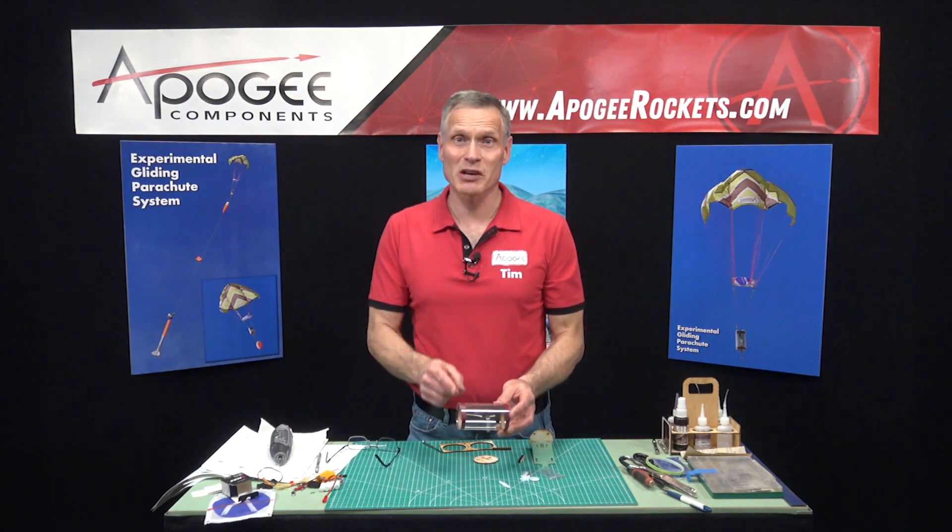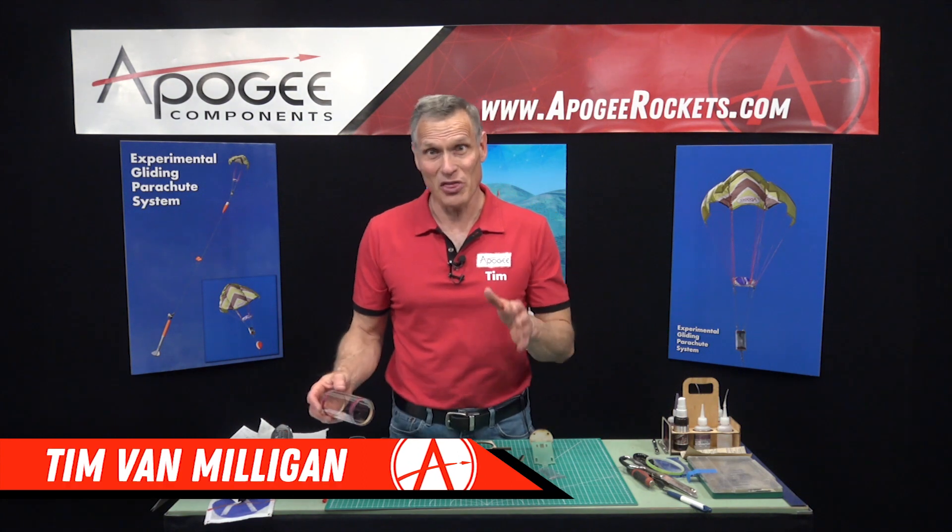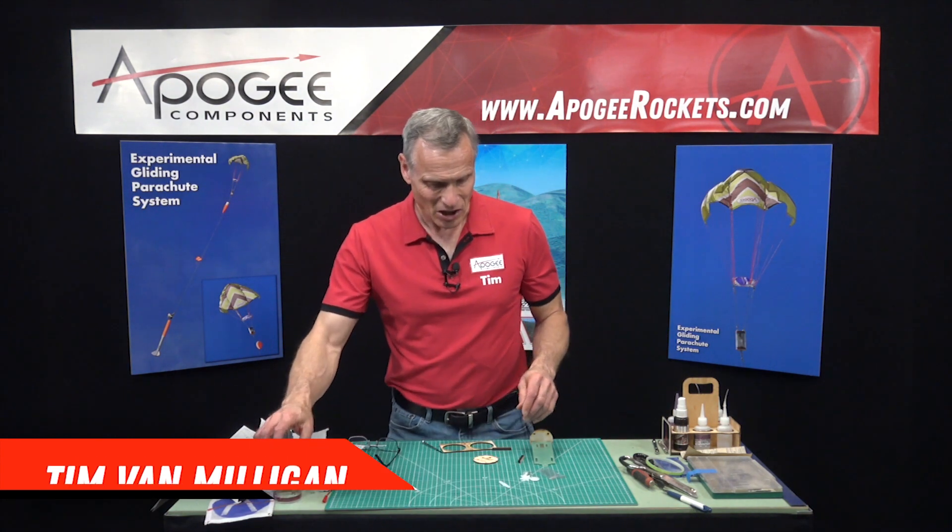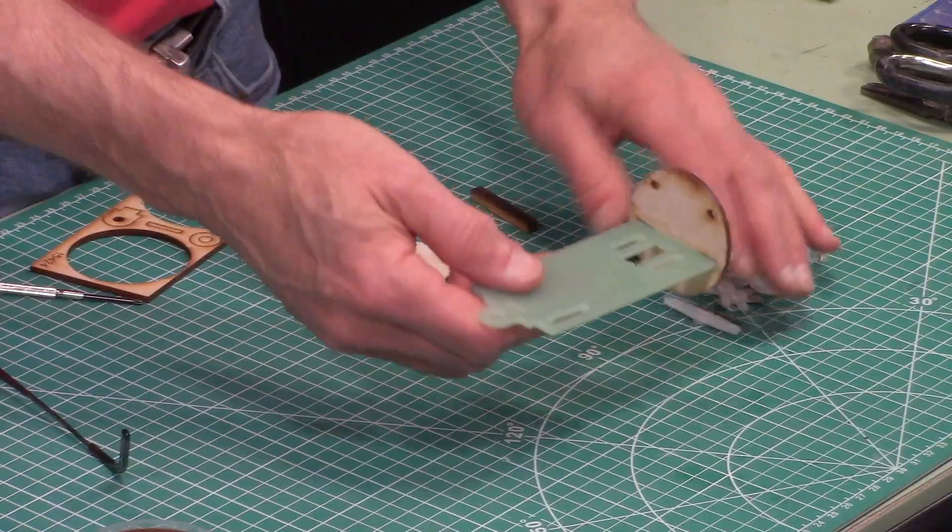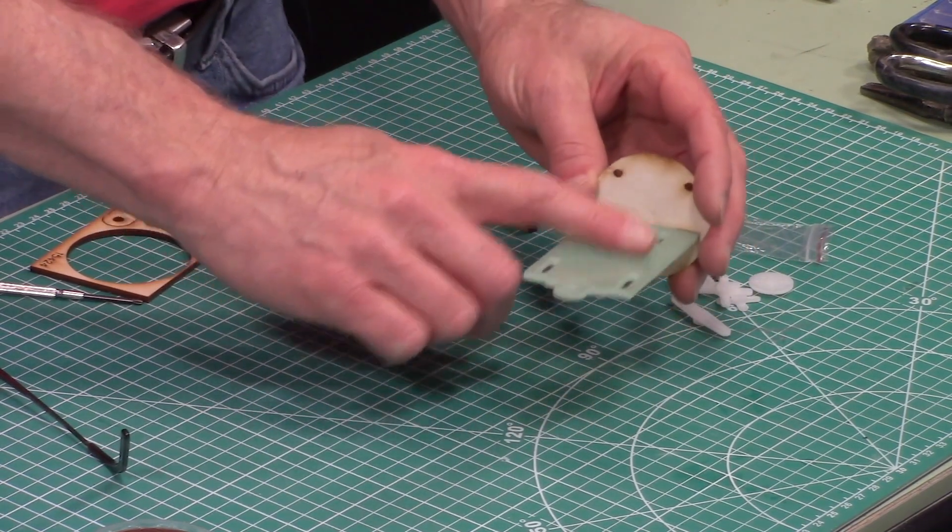This is part two of the assembly of the gliding parachute. My name is Tim Van Milgen and thanks for watching this. In our last step we had glued on the bulkhead to the eBay sled plate.